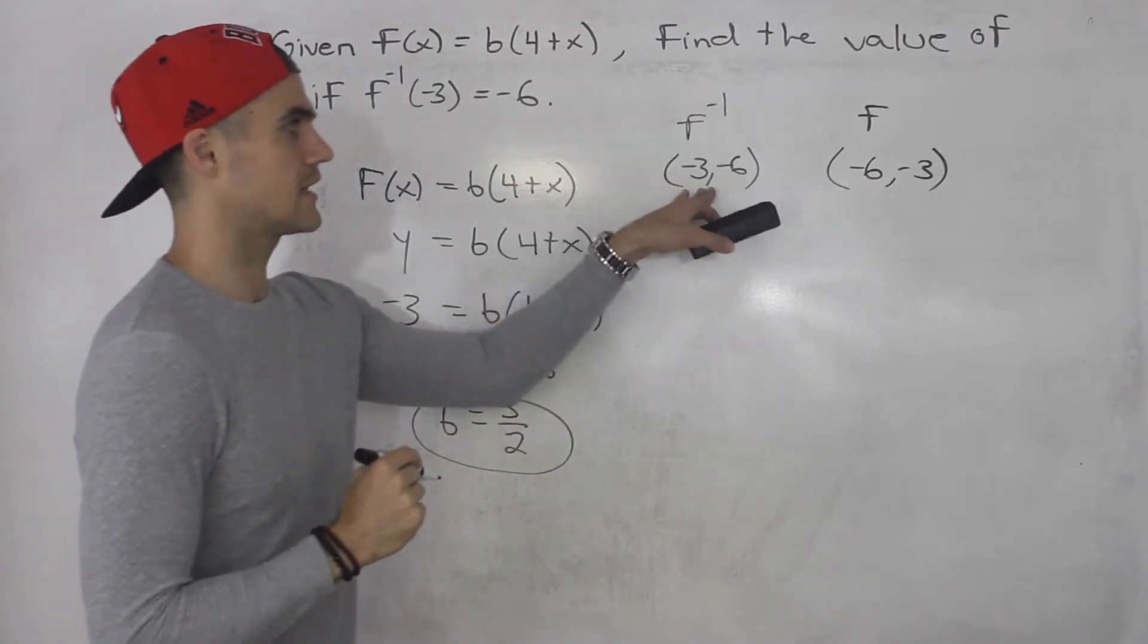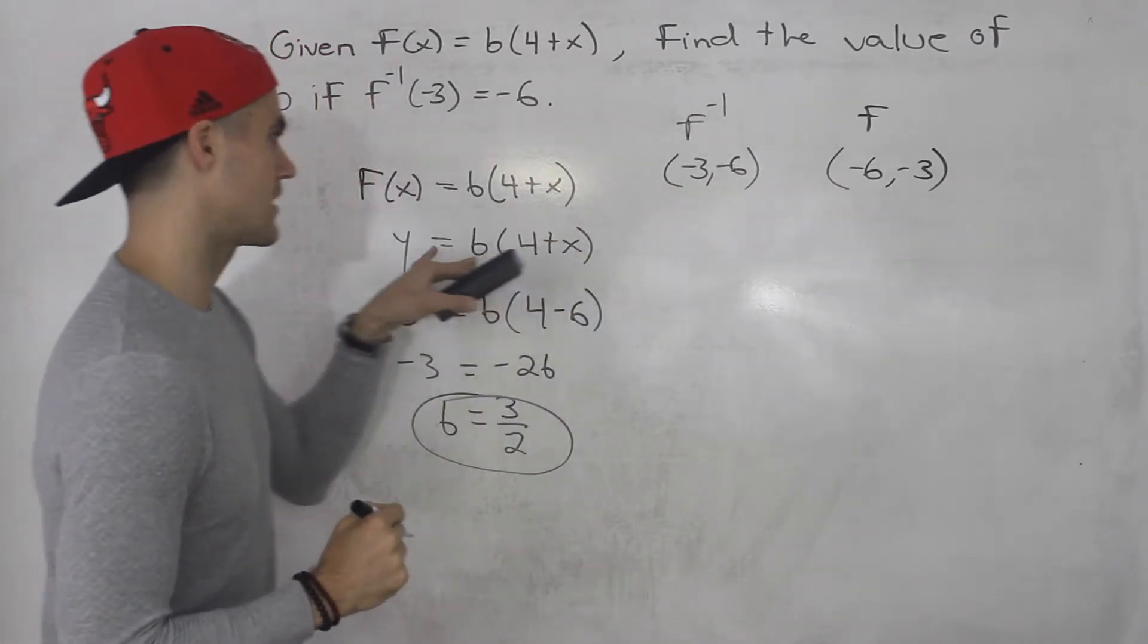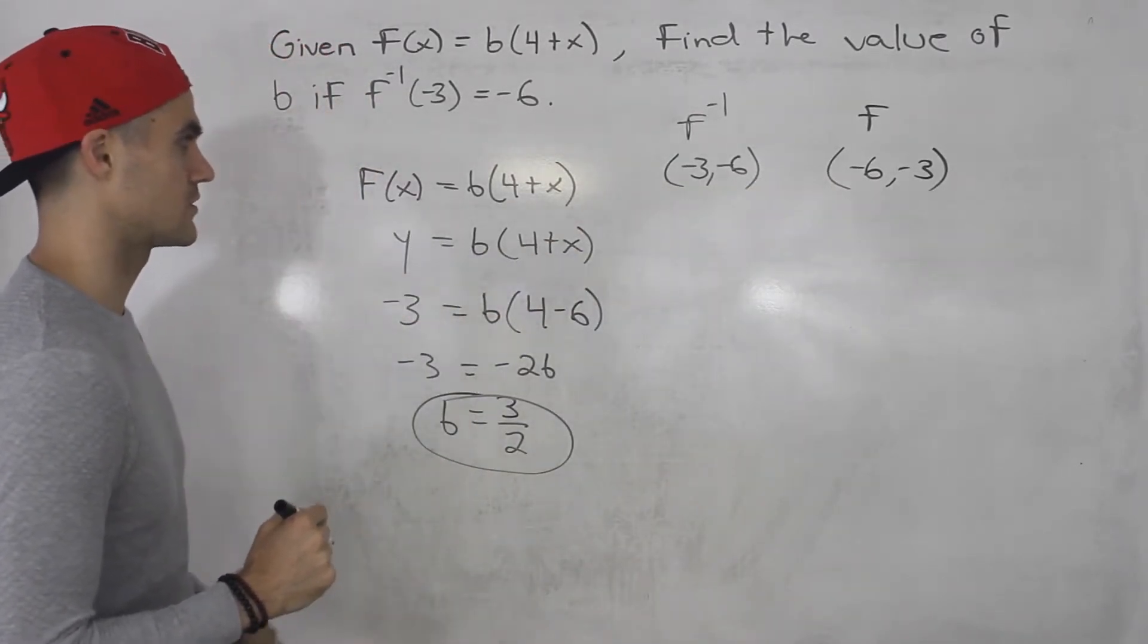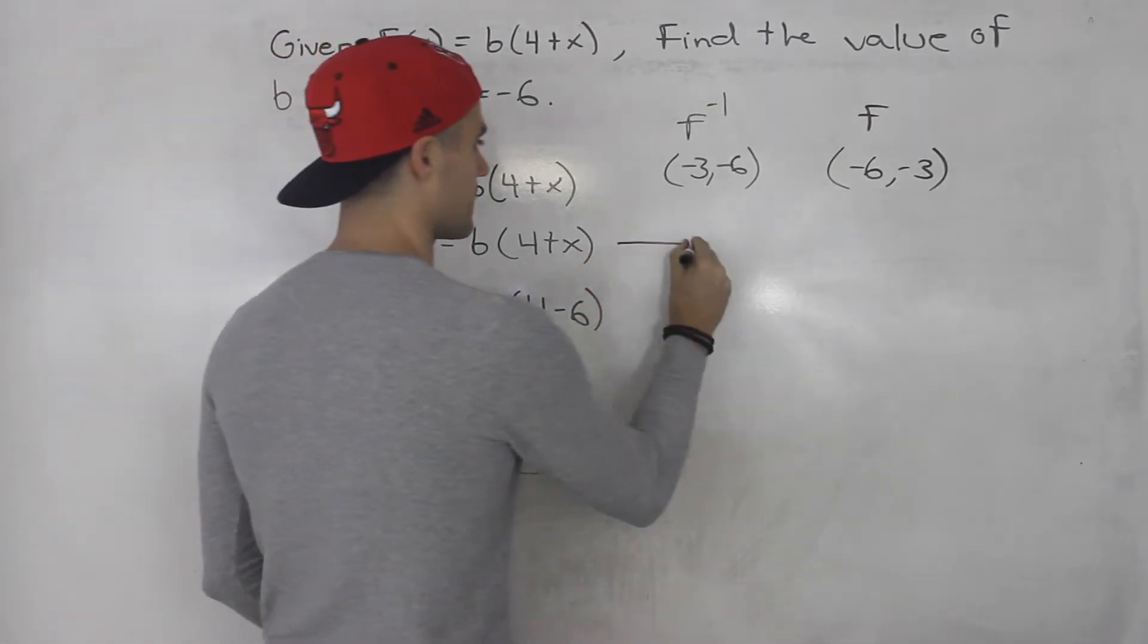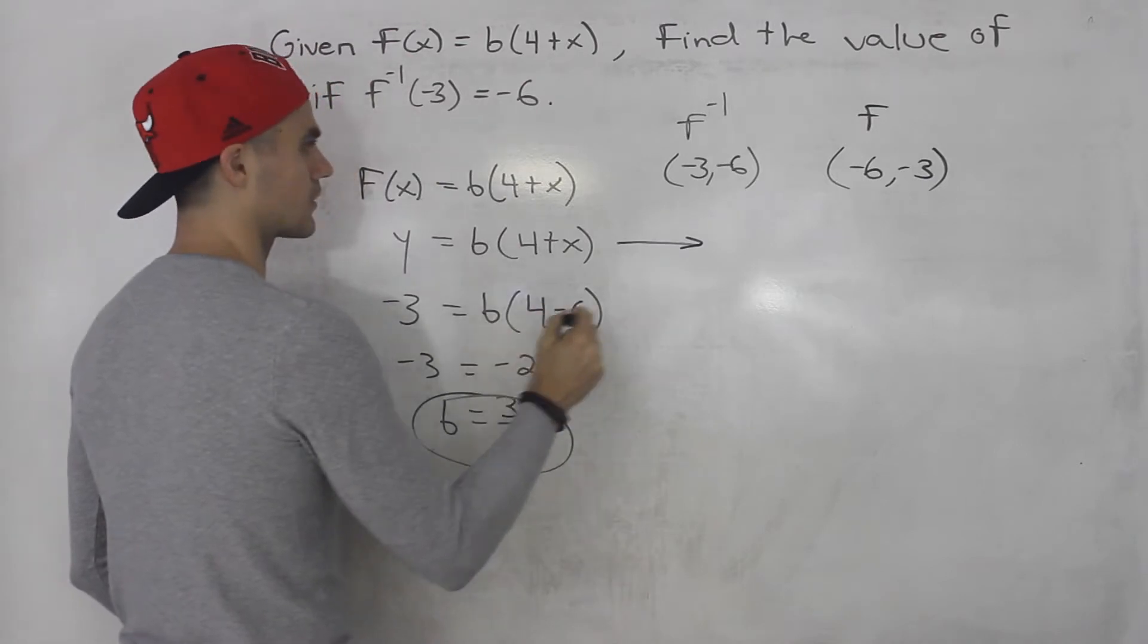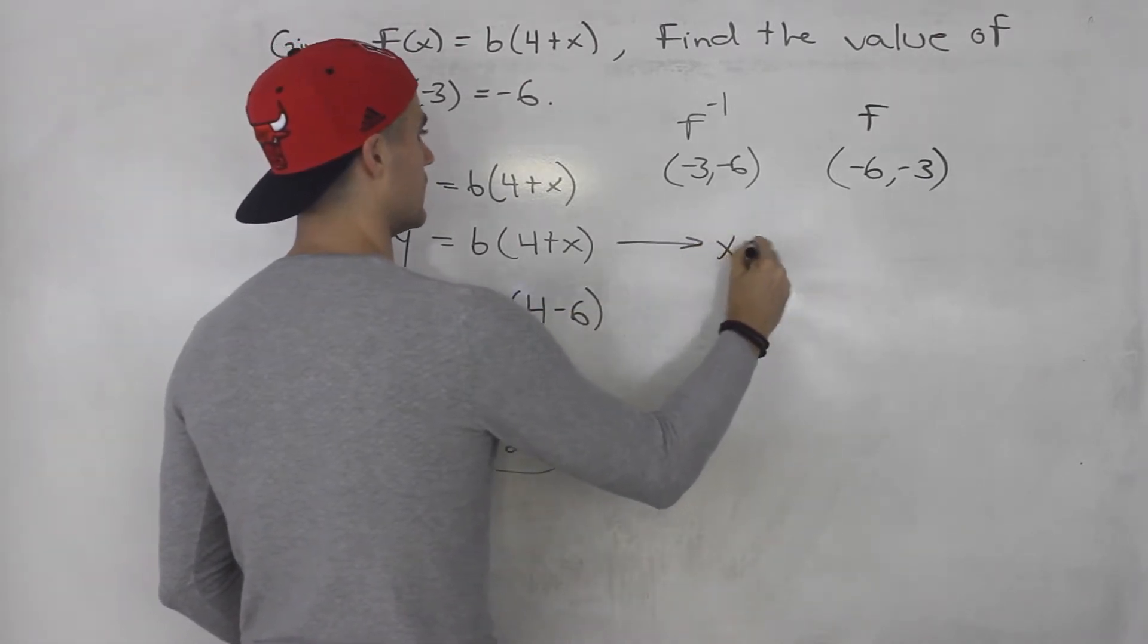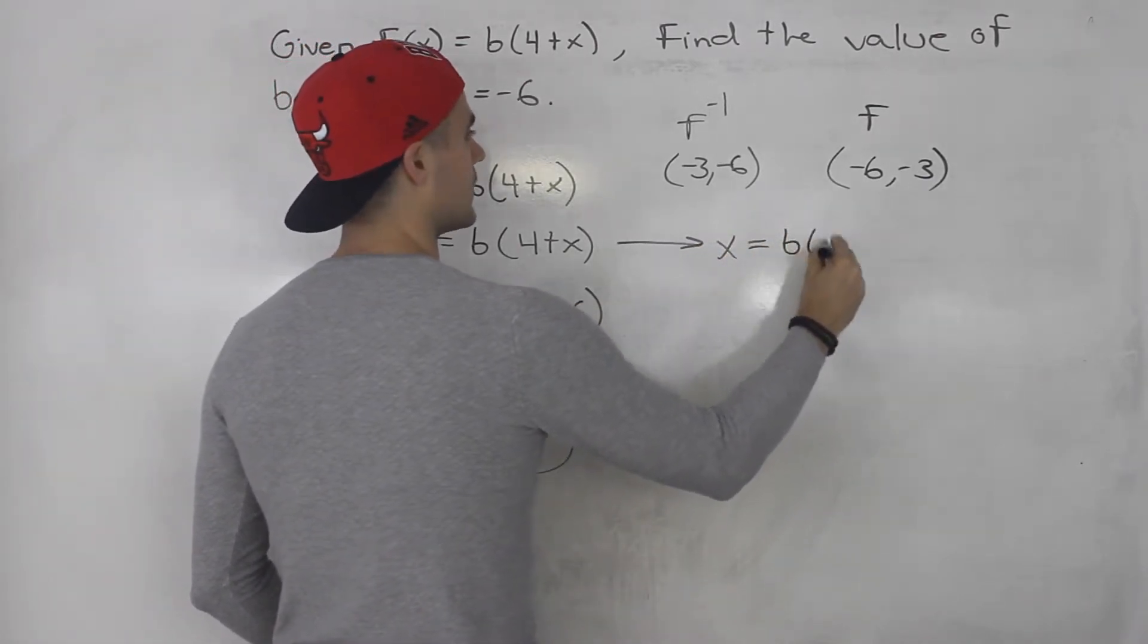So I feel like it's easier to just take that coordinate, switch it, and then sub it into the actual function. Now if you were going to use that other method where you find the inverse first, again it's going to take you a lot longer. I wouldn't suggest it, but I could show you how to do it anyway.